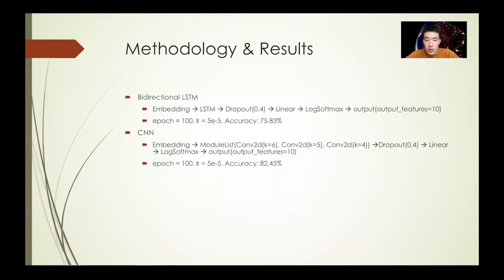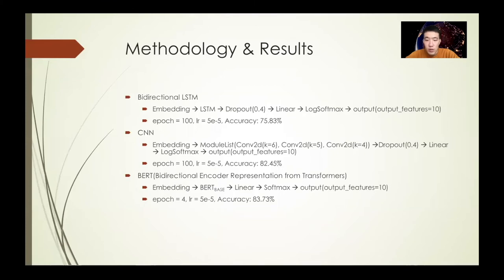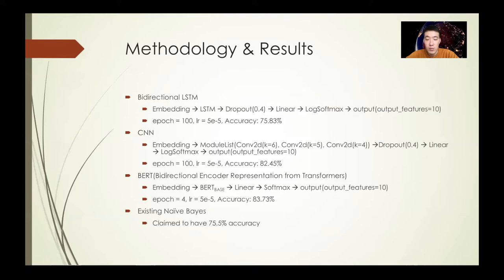The third model is the Bidirectional Encoder Representations from Transformers, known as BERT. It is a neural network-based technique for natural language processing pre-training. We used four epochs as suggested by the original paper, and obtained an accuracy of 83.73%, which is the highest. As a reminder, the existing naive Bayes work claimed 75.5% accuracy.